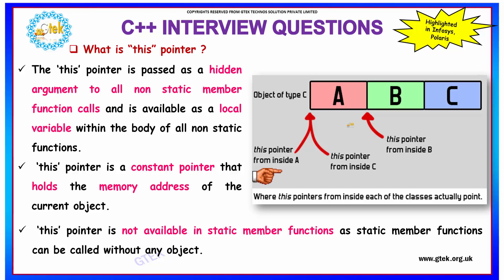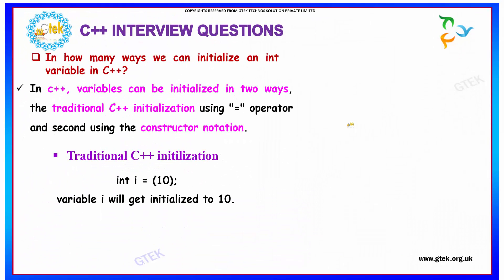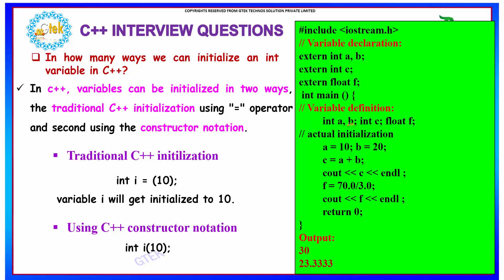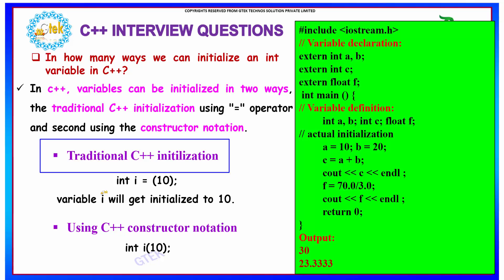The this pointer is not available in static member functions, as static member functions can be called without any object. This pointer is used for accessing the values it is pointing to within the body of all non-static functions. These types of questions are highlighted in Infosys and Polaris interviews. In C++, variables can be initialized in two ways.